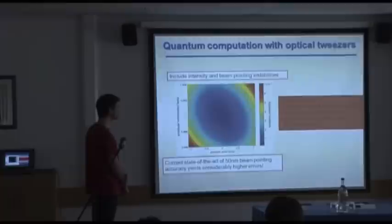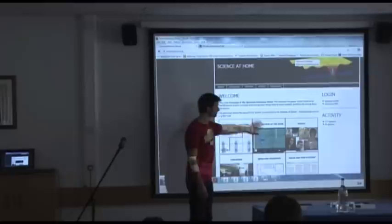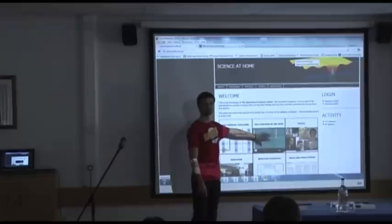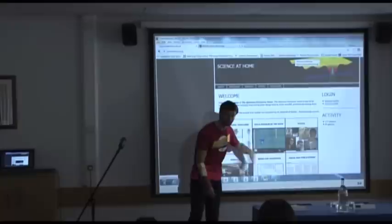This is all something we're doing in the context of our website, scienceathome.org, where we have a little outline of our different activities. There's a small preview you can go in and log in and play — seven levels indicative of the game mechanics we have. We also have an introduction for scientists where we explain in more detail what some of the scientific challenges are and some of the next steps we're working on.